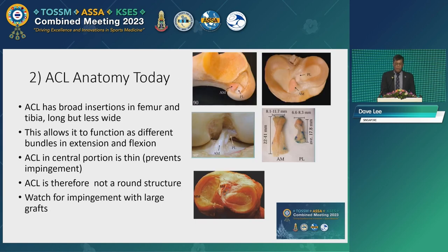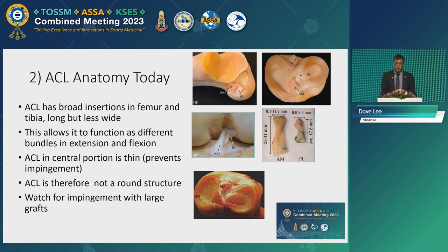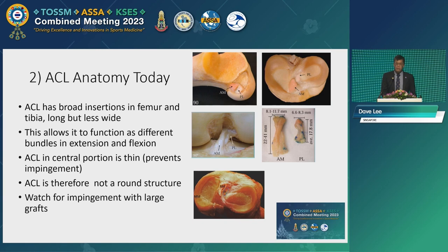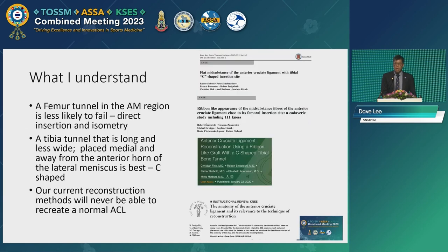The second point — we talk a bit about anatomy. Today we understand that the ACL has broad insertions in the femur and tibia and they are quite large, usually over 12–13mm on both sides, which allows the ACL to function as different bundles. We know the AM and PL bundles in both extension and flexion. However, the ACL in the central portion is thin, and so that prevents impingement — this is the native ACL.